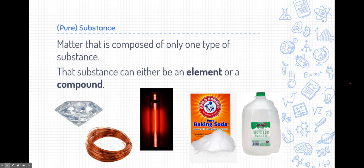First off, pure substance. A lot of times we just call it a substance, but the word pure kind of gives it a little bit more definition. The pure substance is matter that is composed of only one type of substance. It's pure. It's purely that one substance.